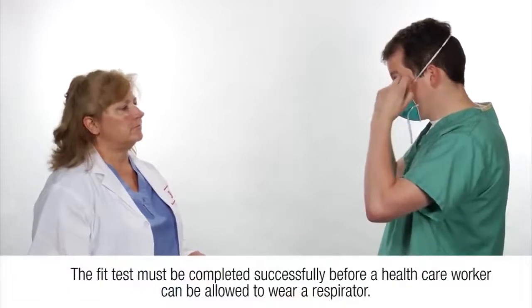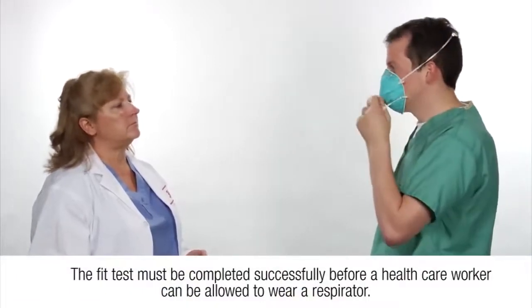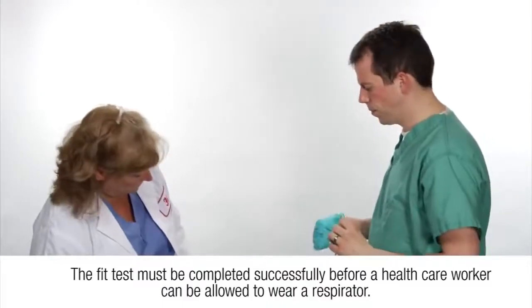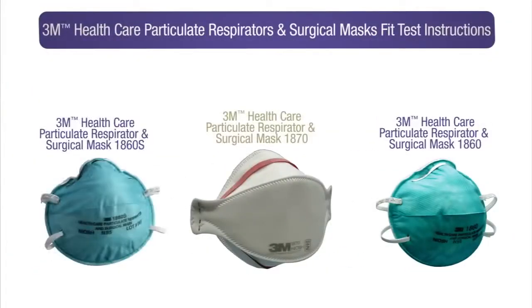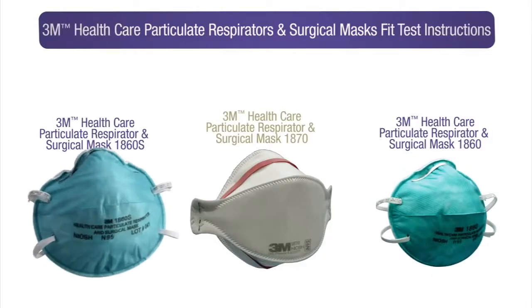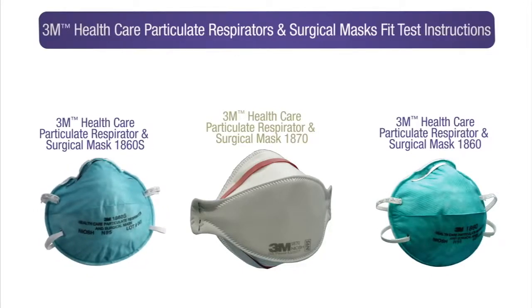The fit test must be completed successfully before a healthcare worker can be allowed to wear a specific model respirator. One commonly used strategy is to fit test all employees on a single respirator model. Those who cannot achieve an adequate fit are then provided another model. For example, you may choose to fit test all employees on a 3M 1870 respirator. Those who cannot achieve an adequate fit after several tries are then provided a 3M 1860 respirator or a 3M 1860S respirator for employees with smaller faces. The fit test procedure is then repeated.